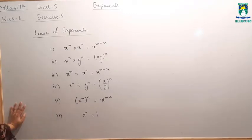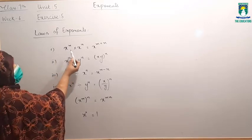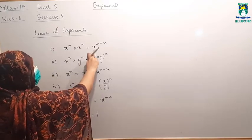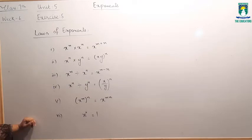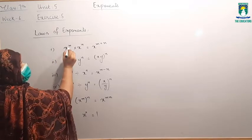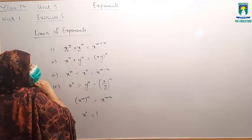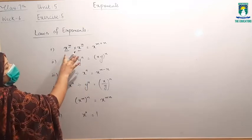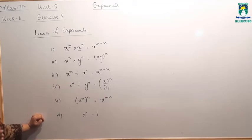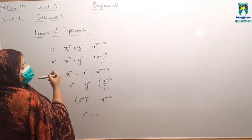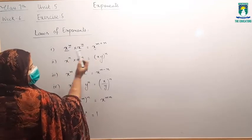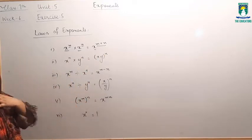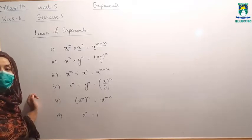Now we are going to discuss the laws of exponents. The first law: x raised to power m multiplied by x raised to power n will be equal to x raised to power m plus n. अगर base सेम हो — यहाँ base x है, exponent m है; यहाँ base x है, exponent n है — और multiply हो रही हो, तो उनकी powers add हो जाती हैं. Base को one time लिखना है और दोनों powers को add कर लेना है.